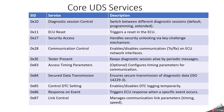Service 0x85 will enable and disable the DTC logging temporarily. Service 0x86 is Response on Event — it will trigger an ECU response when a specific event occurs. Service 0x87 is Link Control, which manages communication link parameters such as timing and speed.